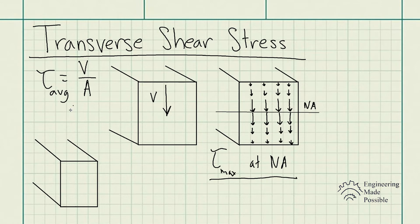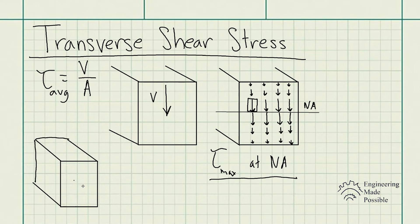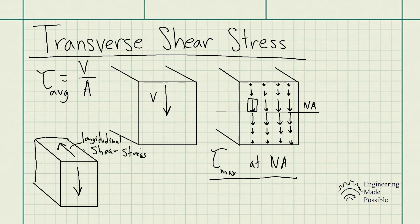The shear maximum is actually experienced at the neutral axis of the cross-section, and it decreases the further away you go from the neutral axis. This is what we call transverse shear stress — when we see that the shear stress is distributed along the cross-section. The average shear stress we've calculated previously is a close approximation; however, this is what we refer to as the transverse shear stress. Not only will you have this transverse shear stress, you will also have what's called a longitudinal shear stress.